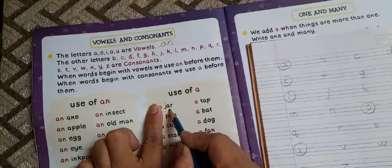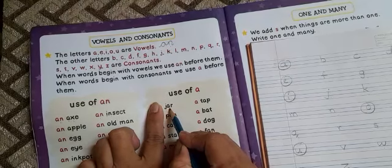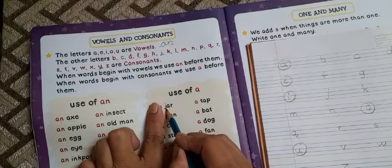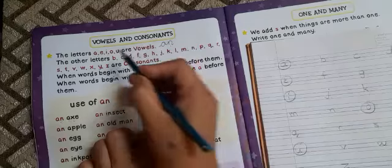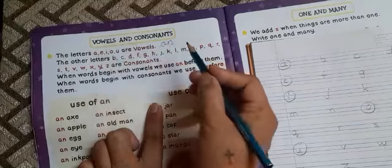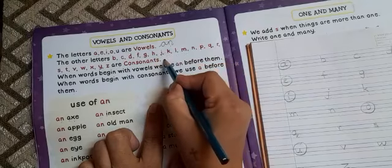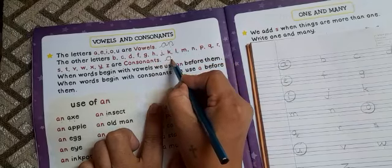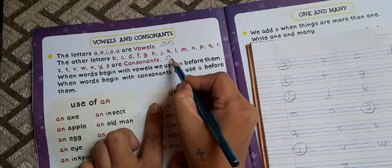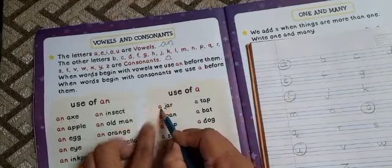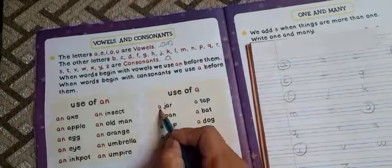The word is jar. The first letter is J. So, is J vowels? No. J is consonants. For consonants, we will use a. A jar.